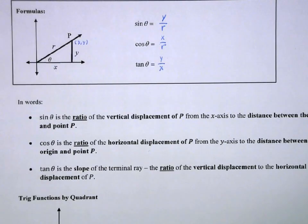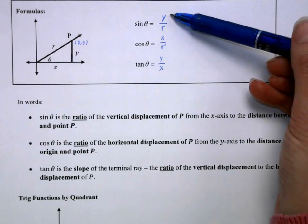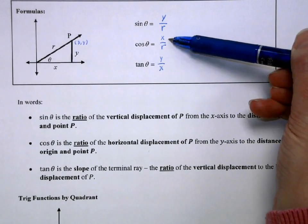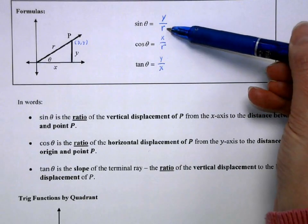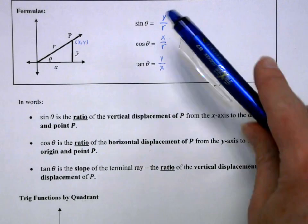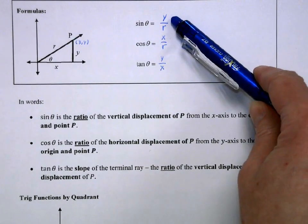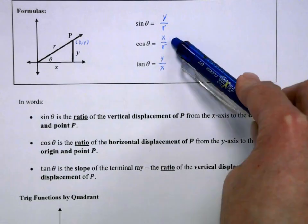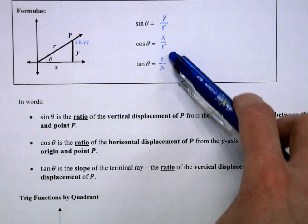We're going to look at the trig functions in each quadrant just to kind of get a big picture of what we can expect in different quadrants. So, x and y will change signs depending on what quadrant we're in. And r, the distance from our point to the origin, is always going to be positive. So, sine is going to follow whatever the sign of y is. Cosine is going to follow whatever the sign of x is. Tangent is going to be a combination of the two.